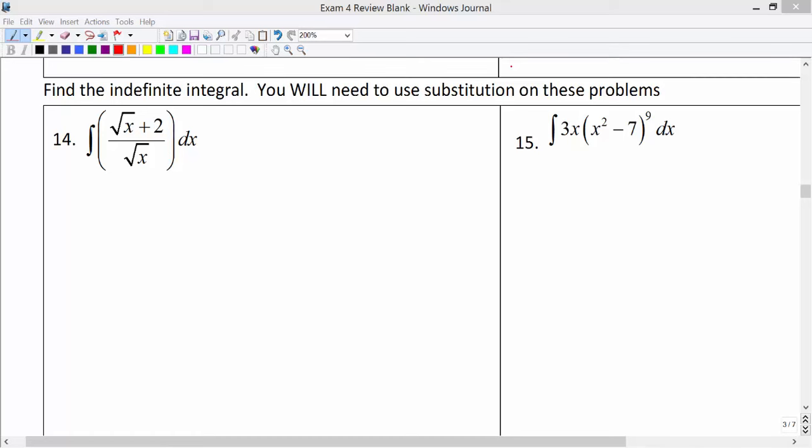For the next several problems, when we find the indefinite integral, it gives us a hint that we will need to use substitution. The first thing we want to do is look at the integrand, look at what we're integrating, and find the most complicated part. We want to let that be u, so I'm going to let u equal the square root of x plus 2.